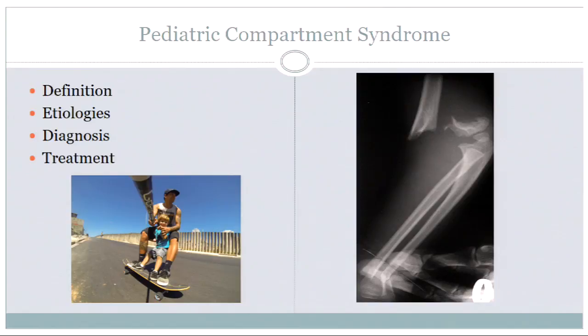It might anatomically be a different disease, but it certainly physiologically is a different disease in children versus adults. I'd like to talk a little bit about these — we'll talk about definitions, etiologies, certainly how the diagnosis is different, and then why the treatment, despite the textbooks looking like the same operation, have very different outcomes in children versus adults.